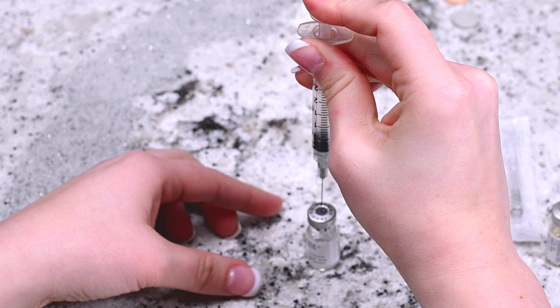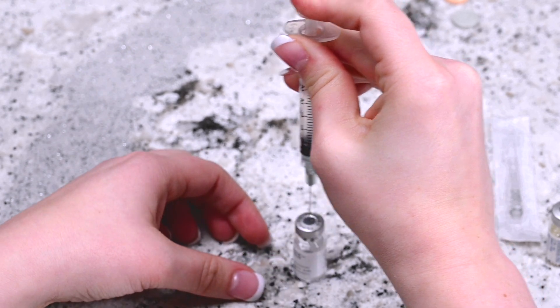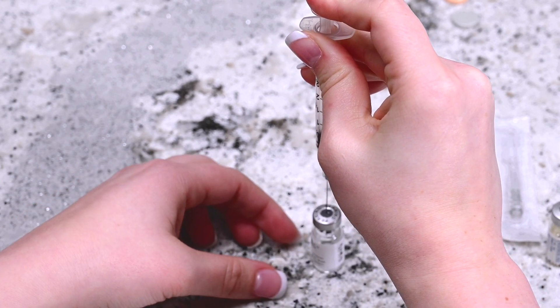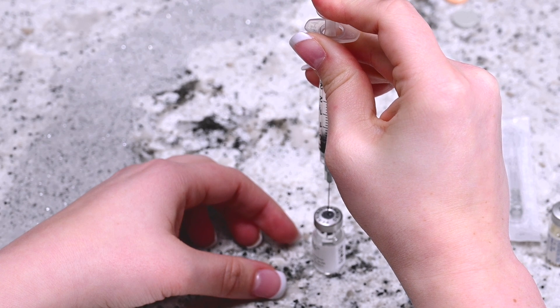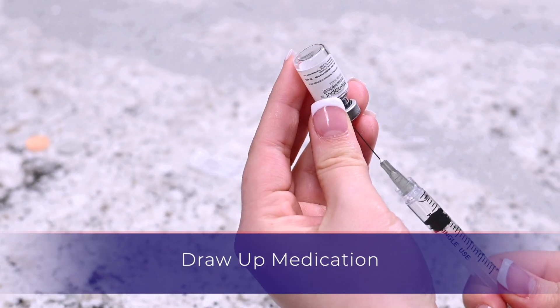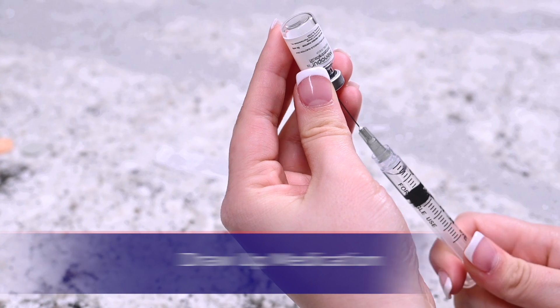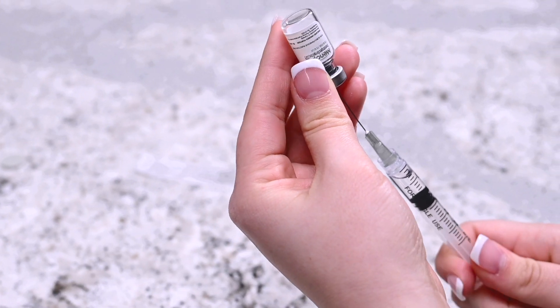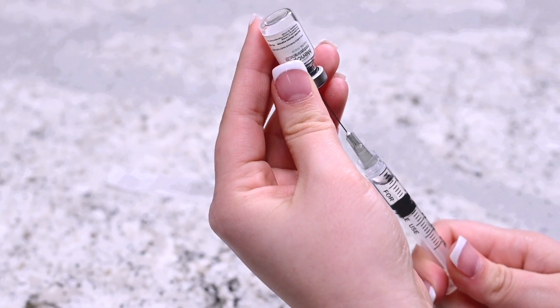After releasing all the liquid into the second vial of Menopur powder, gently mix the contents until the powder dissolves. Do not shake the vial. Invert the syringe without removing it from the vial and pull the plunger back until all the contents from the vial transfer to the syringe.